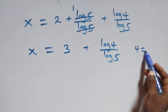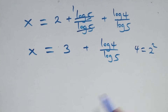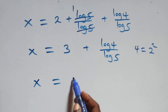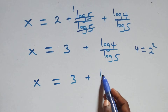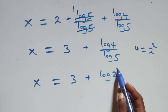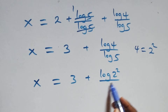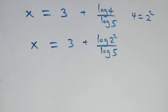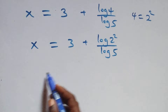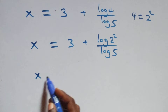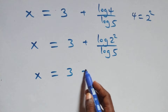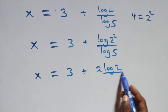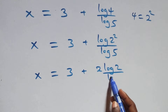We can express 4 as 2 times 2, that's 2 squared. What we have becomes x equals to 3 plus log 2 squared over log 5. We apply the power rule of logarithms, and this becomes x equals to 3 plus 2 log 2 over log 5.